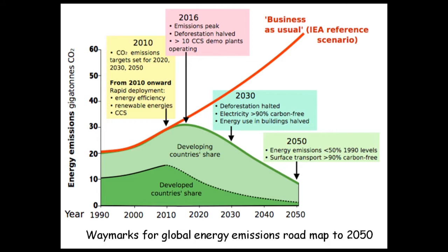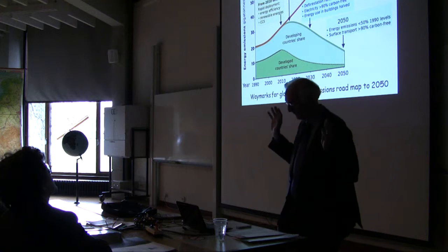The developed countries have to work at it very hard because we are a lot of the problem, and that shows the things above our list. If we do nothing, we just follow up that red line. That's business as usual, according to the International Energy Agency. We will go right through the ceiling, and the world will become an impossible place. So that is the challenge to the world, to meet that sort of program.